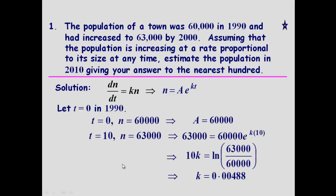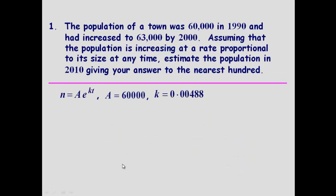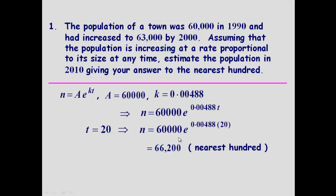So if we plug everything into the right hand side, we can do the last bit. So 60,000 e to the 0.00488 t, and we know t is 20. If we work this out, we can do all that on the calculator, we get that. And it was to the nearest hundred. So that's one done. Now your turn.